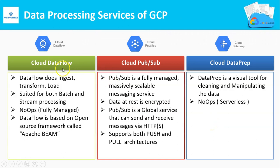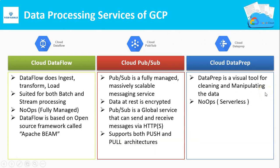For data processing services, we have Cloud Dataflow, Cloud PubSub, and Cloud Dataprep. Cloud Dataflow is a data processing service based on the open-source framework Apache Beam, best suited for both batch and stream processing. Data pipelines can be constructed using Dataflow. Cloud PubSub is a fully managed messaging service — a global service used to send and receive messages via HTTP or HTTPS, supporting both Push and Pull architectures. Cloud Dataprep is a visual tool for cleaning and manipulating your data.